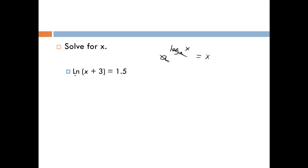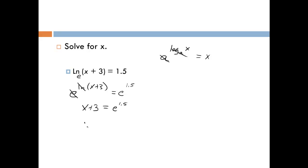For the natural log of the quantity x plus 3, the base is e. So we think of the entire left side as an exponent with base e. Whatever we do to the left side we do to the right, so 1.5 is also an exponent of e. On the left side the e and the natural log cancel, leaving x plus 3. On the right side we have e to the 1.5 power. To get x by itself, we subtract 3 from both sides, so x equals e to the 1.5 power minus 3.